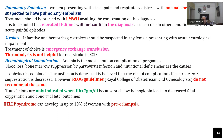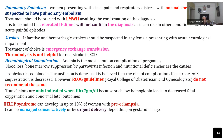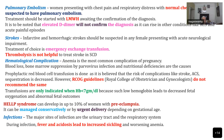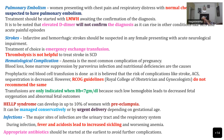HELLP syndrome may develop if the patient has pre-eclampsia with sickle cell disease, so you have to watch out for its presence. HELLP syndrome can be managed conservatively or by urgent delivery depending on gestational age. These patients are also more prone for infection; major sites include the urinary tract and respiratory system. During infection, they can develop a crisis because of fever and acidosis leading to sickling and worsening anemia, so early administration of appropriate antibiotics is very important.